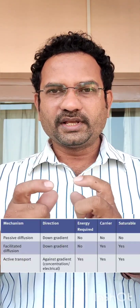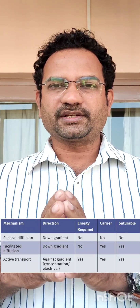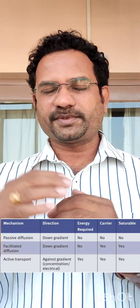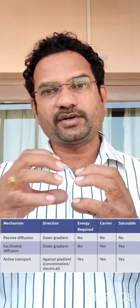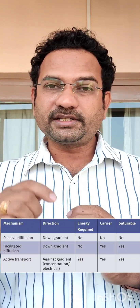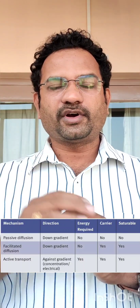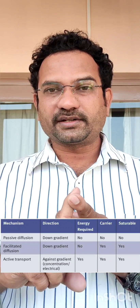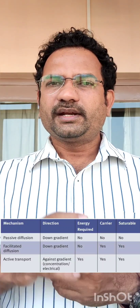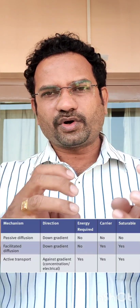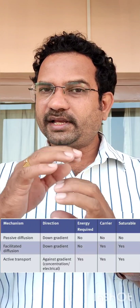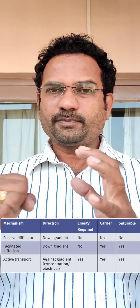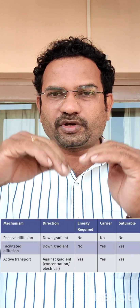The third one is active absorption. As the name indicates, active means it involves energy utilization — drug absorption occurs by using energy. How does it occur? Up the gradient, meaning from lower concentration to higher concentration. This is against thermodynamic principles, which is the reason why it requires energy in the form of ATP. Does it need a carrier? Yes — the protein carrier carries the drug molecules into the blood circulation. Is it saturable? Yes — once the carrier molecule becomes saturated with drug molecules, absorption reduces.